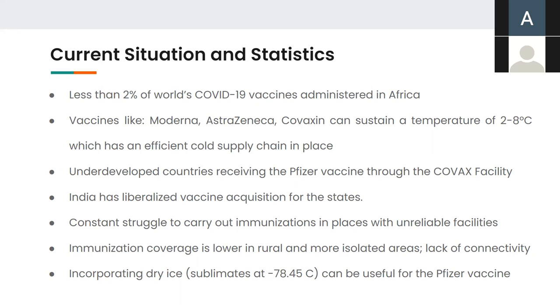While these underdeveloped countries have been receiving the Pfizer vaccine till now only through the limited COVAX facilities in place. While countries like India have liberalized vaccine acquisition for states. There is a big challenge in vaccinating people living in places lacking reliable electricity and other basic facilities. The vaccination numbers are even worse in rural isolated areas, lacking direct connectivity with big cities.